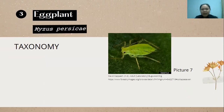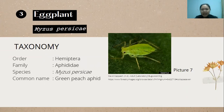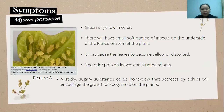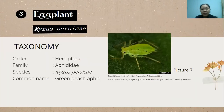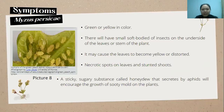Now for the last crop, eggplant, with the insect Myzus persicae. The order is Hemiptera and the family is Aphididae. Its common name is the green peach aphid. As shown in picture seven, it is green in color and can sometimes also be yellow in color.